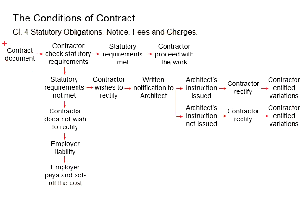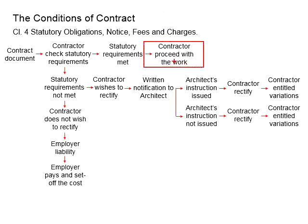Based on the contract document given, the contractor will need to be vigilant regarding the statutory requirements. The contractor must check the works and the expectations from the contract document for any violations of the law or requirements by local authorities. There are two possible outcomes: whether the statutory requirements are met or not met. If all requirements are met and there are no violations of the law, then the contractor can proceed with the work.